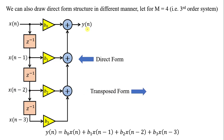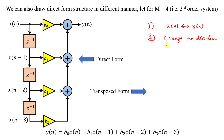Sometimes a question is asked: what is the transposed form? The steps to obtain the transposed form are: Step 1 — interchange X(N) and Y(N), that is, interchange input and output. Step 2 — change the direction of all the arrows. Step 3 — summation nodes are converted into branch nodes, and branch nodes are converted into summation nodes.